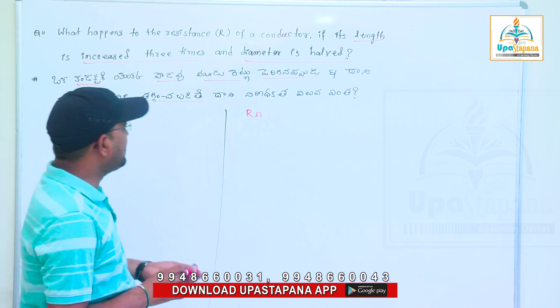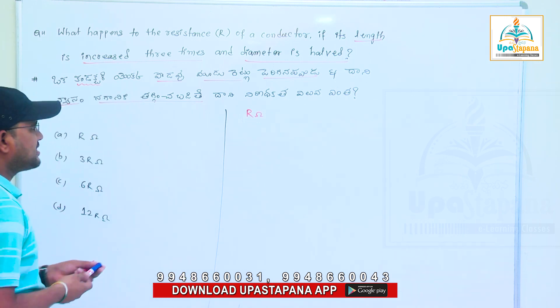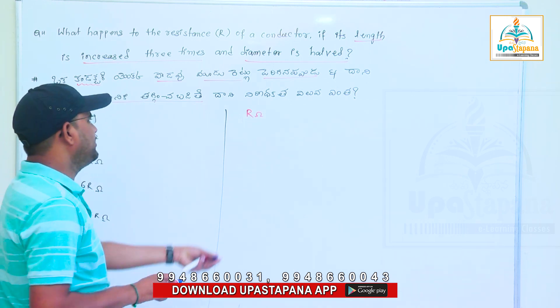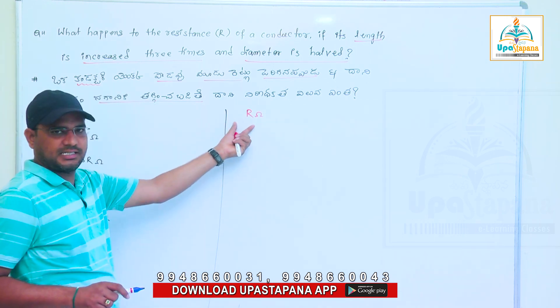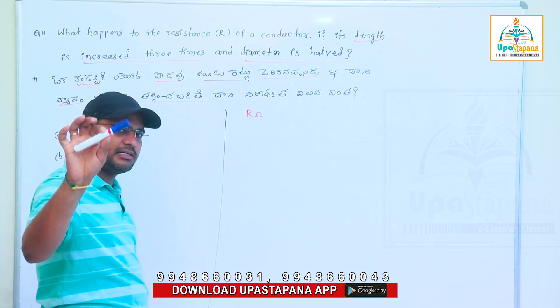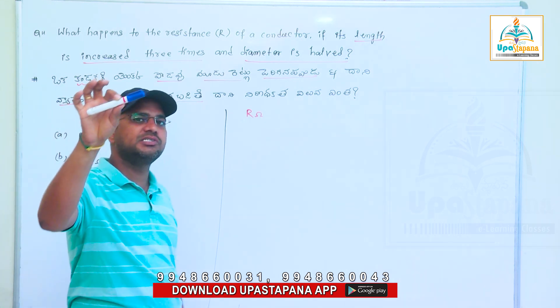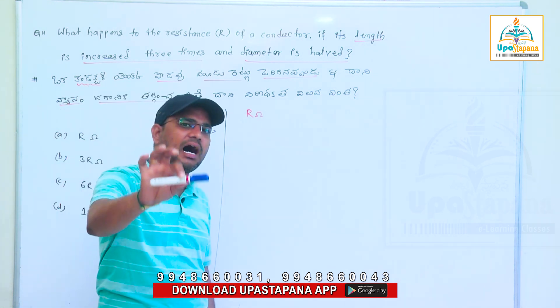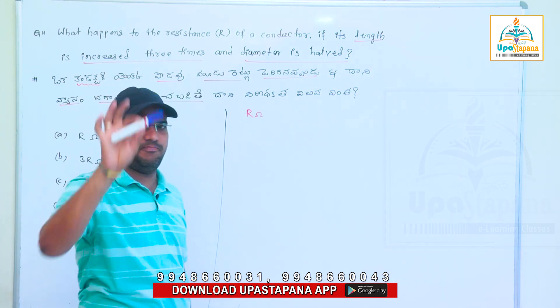Let's look at the design formula of resistance. This is the original resistance. If it's a conductor, this conductor's resistance is original. R is the same.